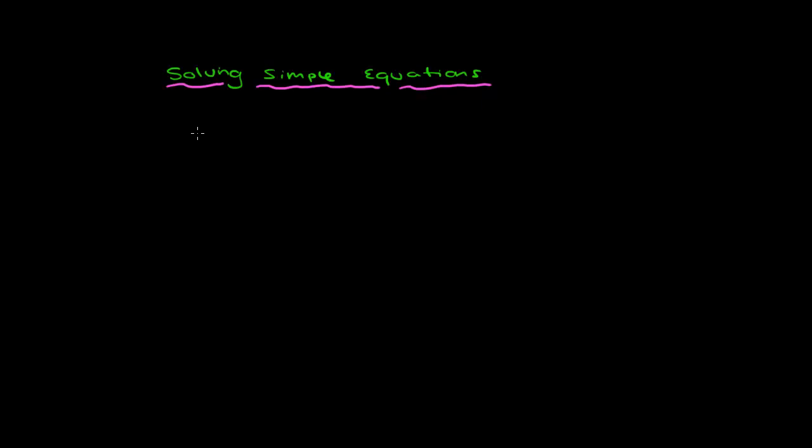So first of all, we want to look at what is an equation. Before we look at what an equation is, let's look first at what an expression is. So we're going to look at the first expression of x plus 3. Now we know that x represents an unknown number, or any number in fact.